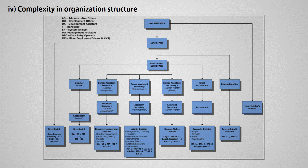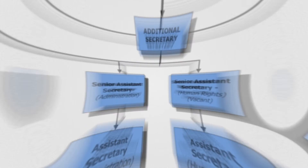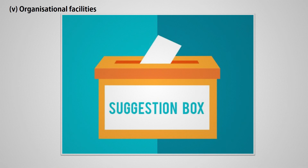The next organizational barrier is complexity in organization structure. If there are many managerial levels, communication gets delayed and distorted because the number of filter points is greater in that structure.